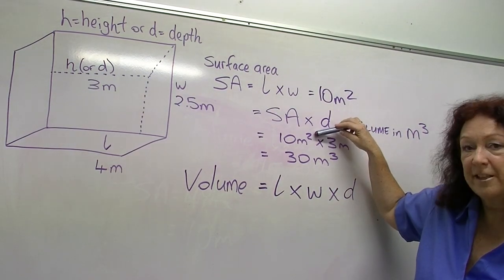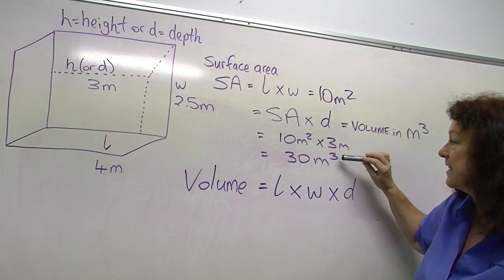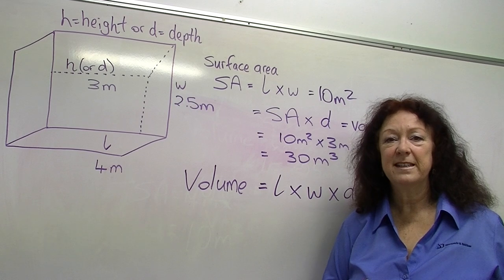You'll notice our surface area was in square meters. We've multiplied that by meters again, giving us volume in cubic meters.